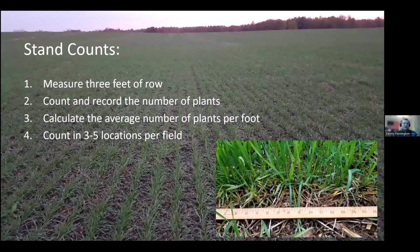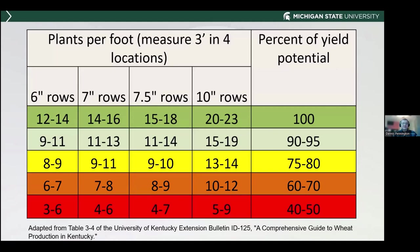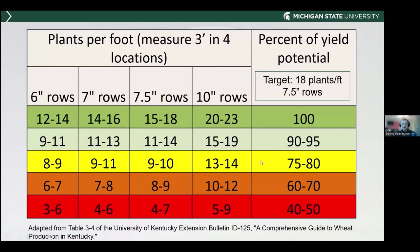Do some stand counts — measure three feet of row, count the number of plants in each row, and do a simple average of plants per foot. Do this in different locations across the field, not just your best or worst spots. According to a University of Kentucky bulletin, on seven-and-a-half-inch rows you need between 15 and 18 plants per foot of row to achieve full yield potential. If you get down to 11 or 14, you're going to see yield reduction. Use those numbers to make decisions about the crop.